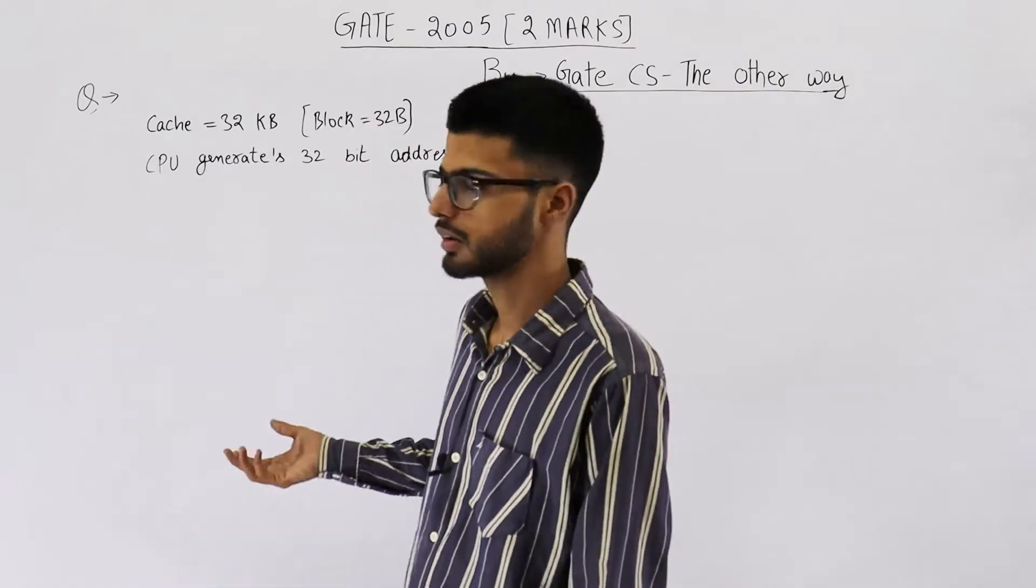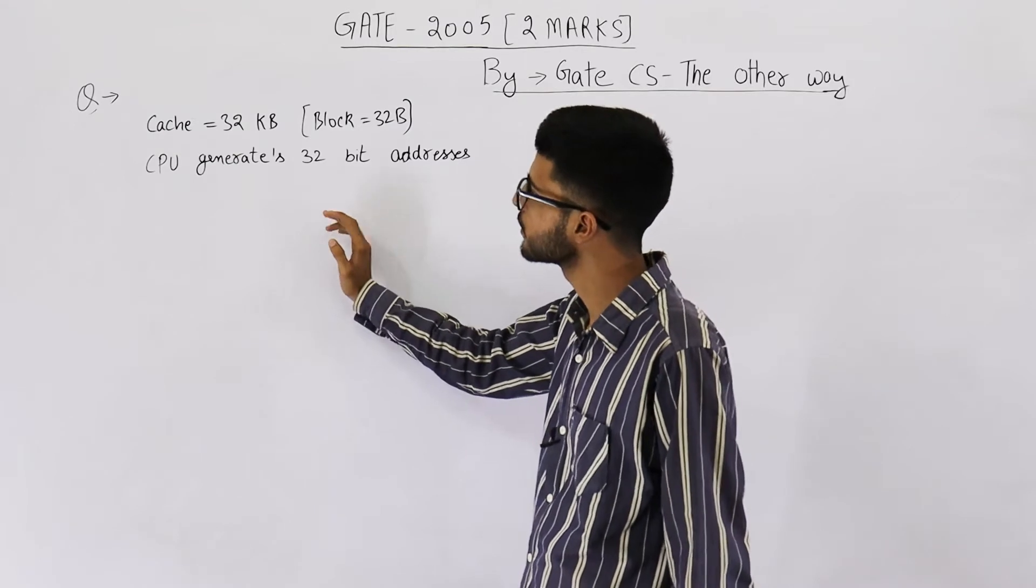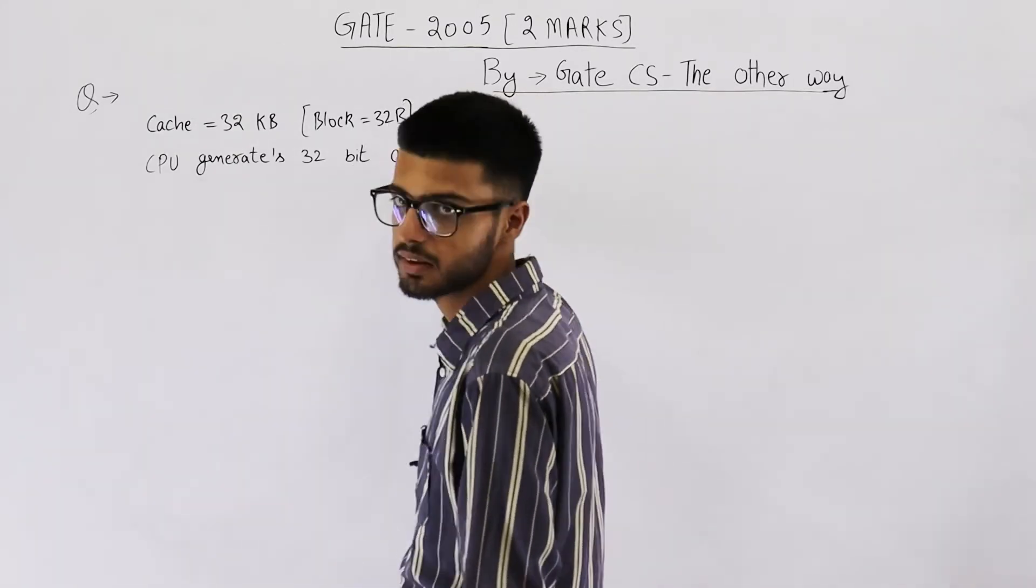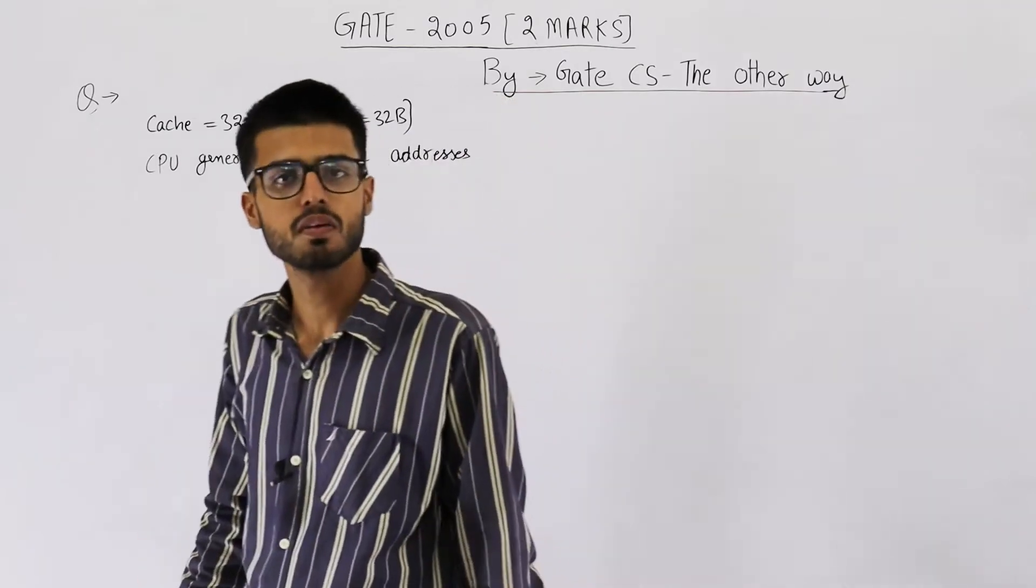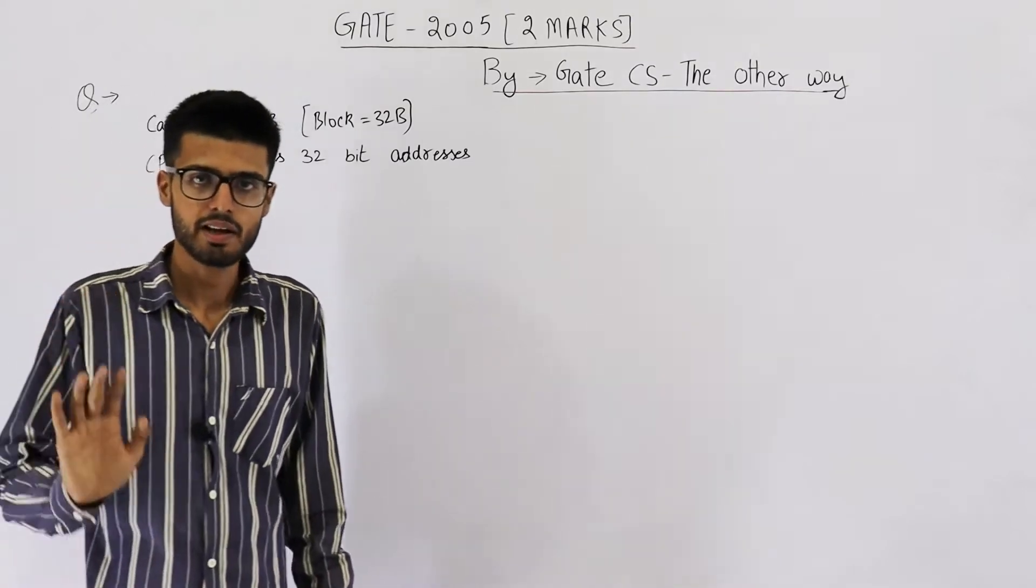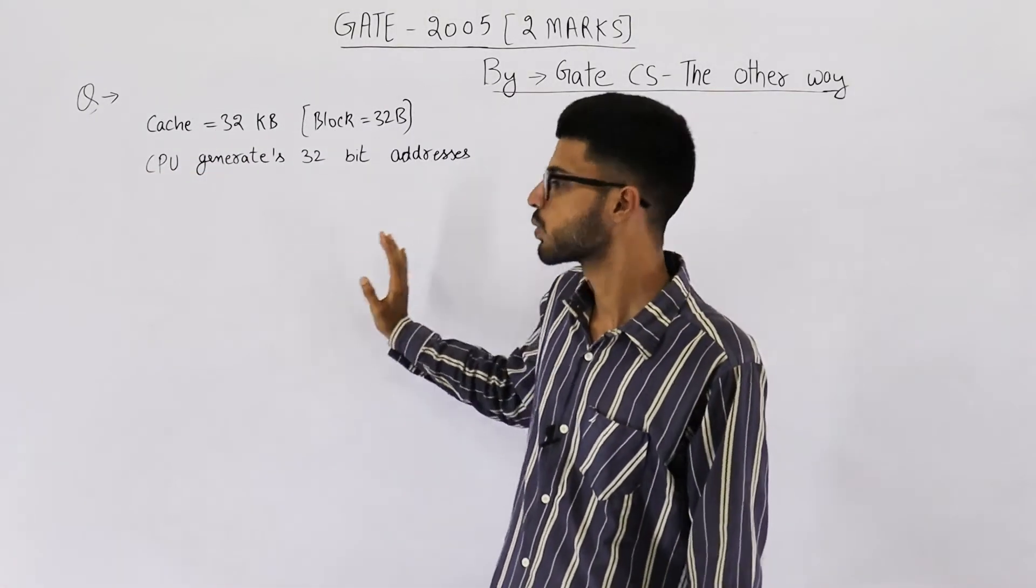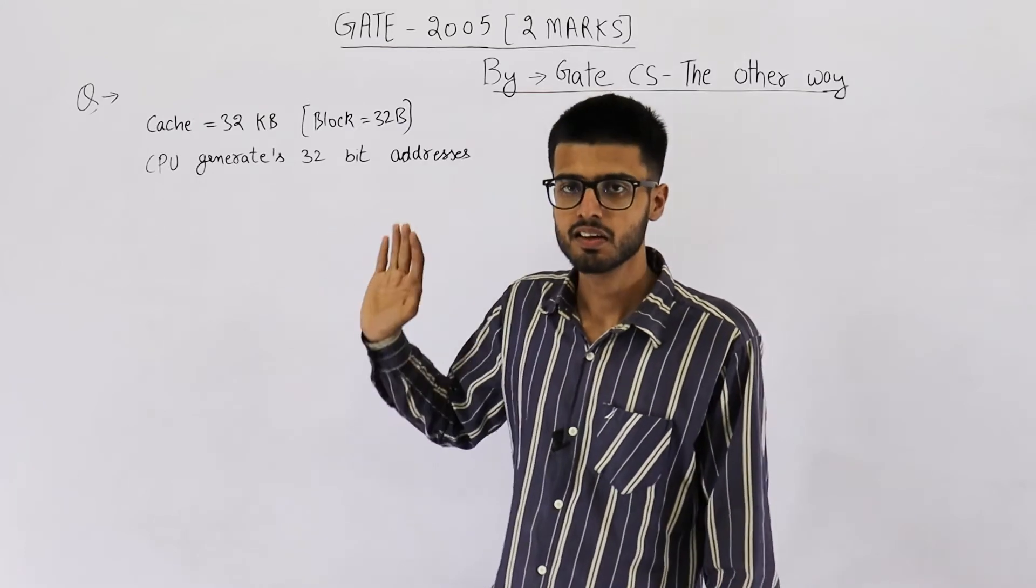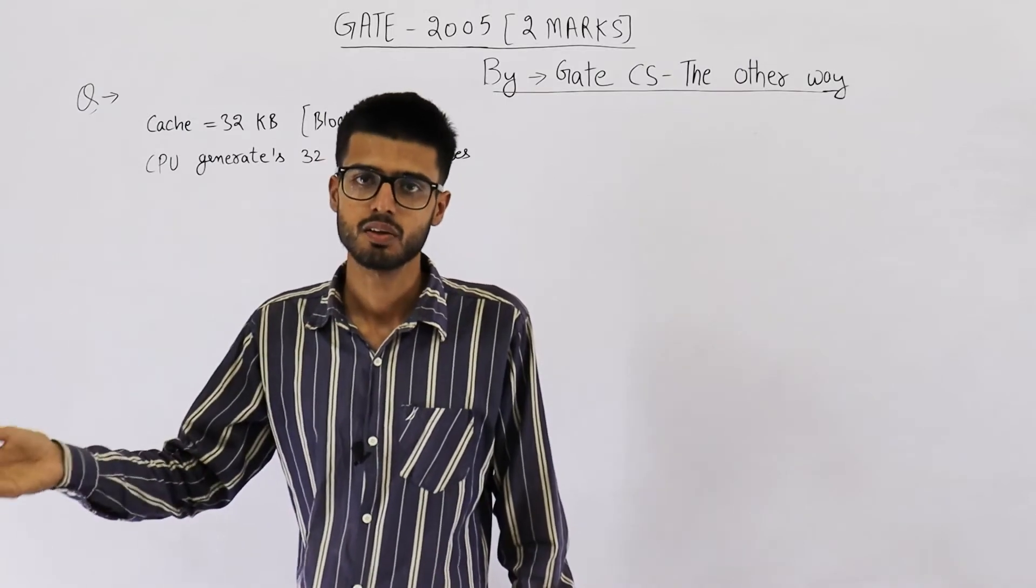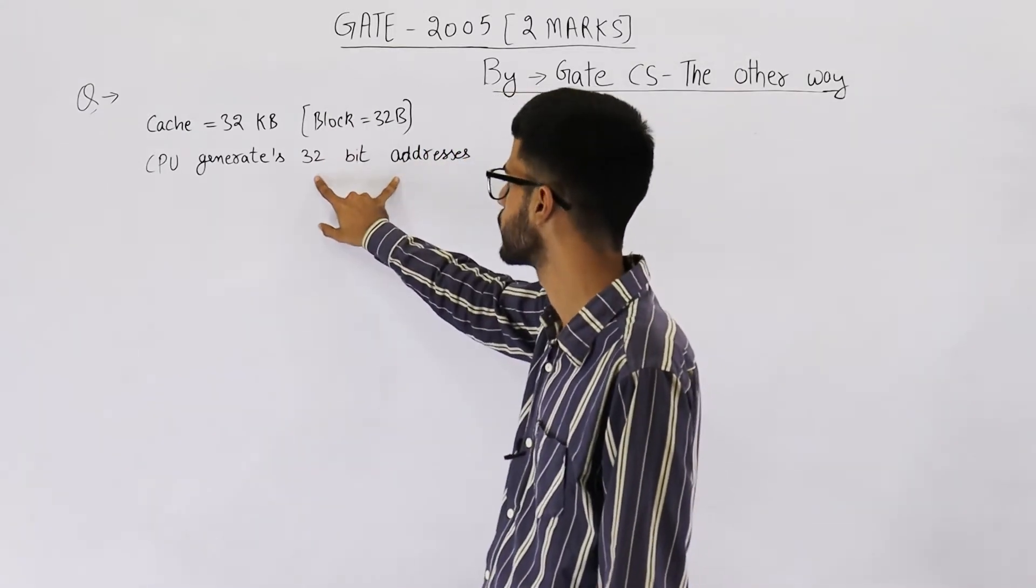Now when I used to solve this question in offline classes, students had this doubt that CPU generates a 32-bit address. That means they're talking about a virtual address. No, they're talking about physical address only. I agree that CPU generates a virtual address, but don't overcomplicate things here. They're talking about after the conversion. That means that virtual address after converting to a physical one is 32-bit address.